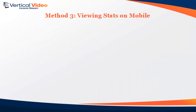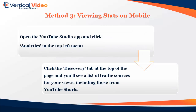Method three: viewing stats on mobile. Open the YouTube Studio app and click Analytics. In the top left menu, click the Discovery tab at the top of the page and you'll see a list of traffic sources for your views, including those from YouTube Shorts.